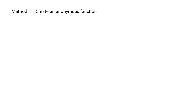We will discuss three methods for defining a function. The first method involves using an anonymous function. Let's say we want to find the root for the function x cubed minus 0.3. We can type: myfunc = @(x) x^3 - 0.3. This creates an anonymous function of a single variable x. Next, we type x0 = 2, which sets the initial guess of the root as 2.